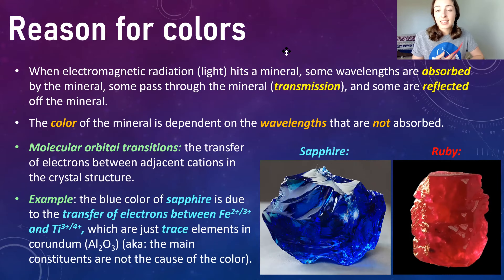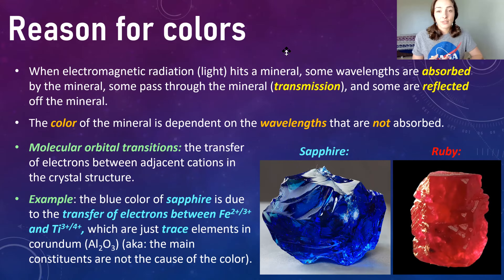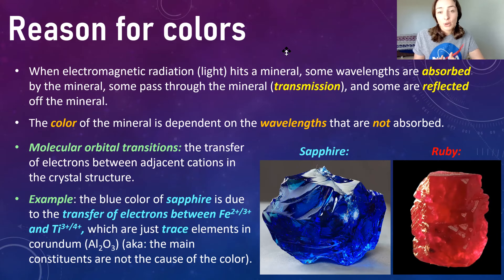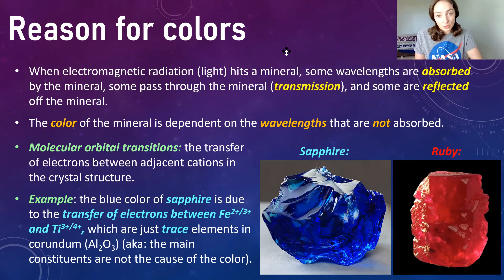The next type is molecular orbital transitions, which is when electrons are transferred between adjacent cations in the crystal structure. For example, in sapphire, electrons can be transferred between Fe²⁺ and Ti⁴⁺, and Fe³⁺ and Ti³⁺ respectively. Iron and titanium are actually just trace elements in sapphire that control its entire color. Without those trace elements, sapphire is a variety of corundum — aluminum oxide — which would be colorless in its pure major composition.